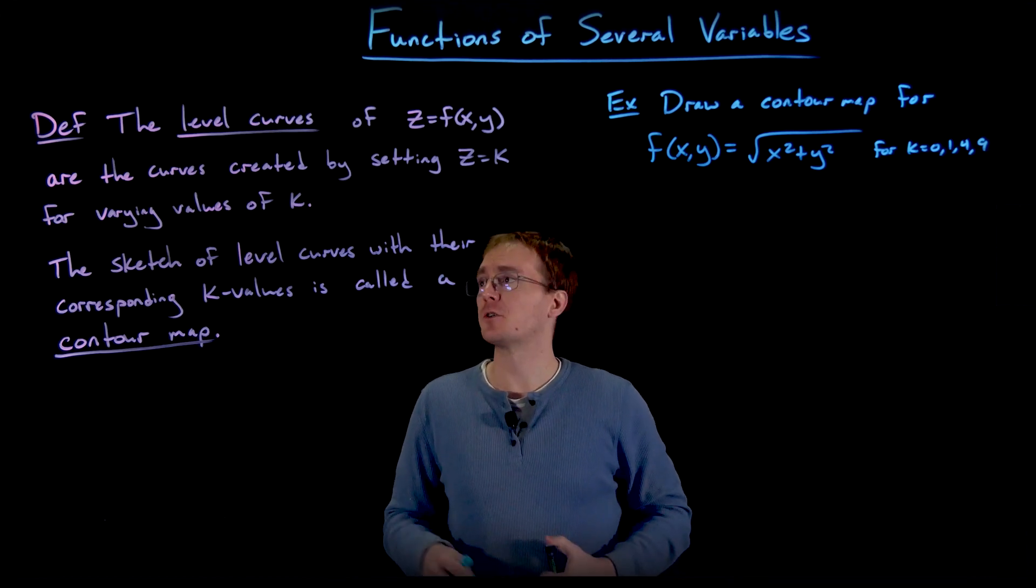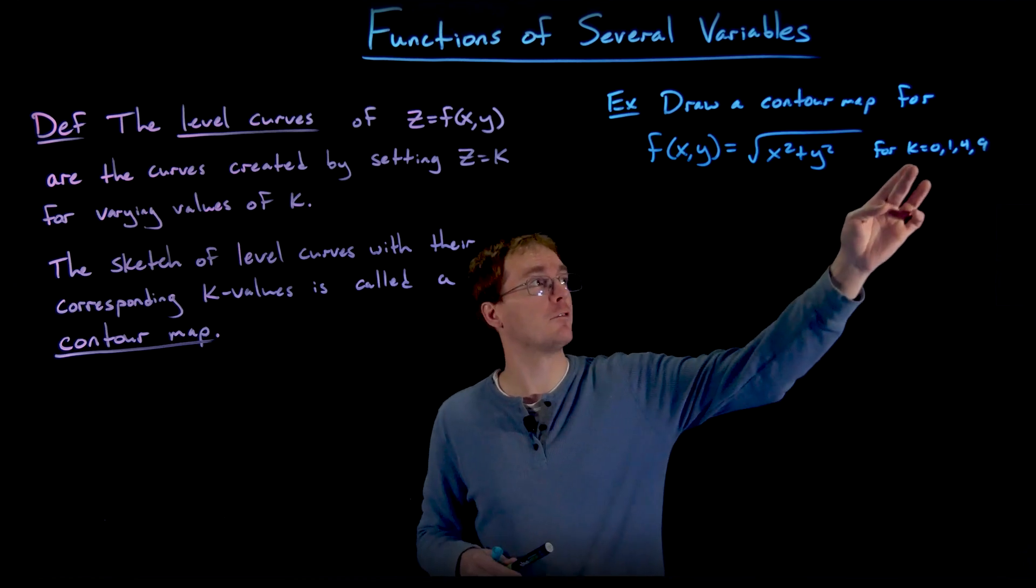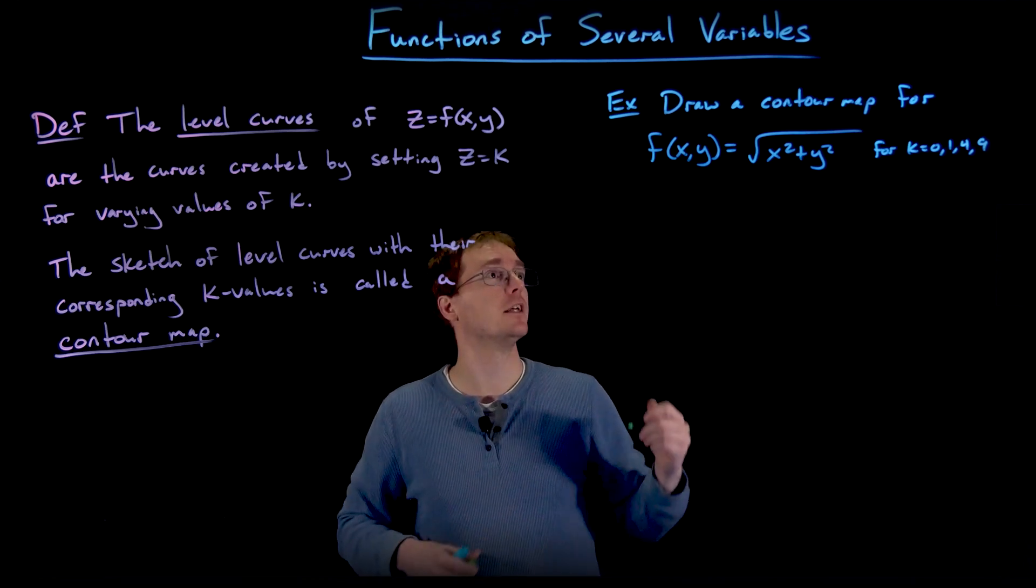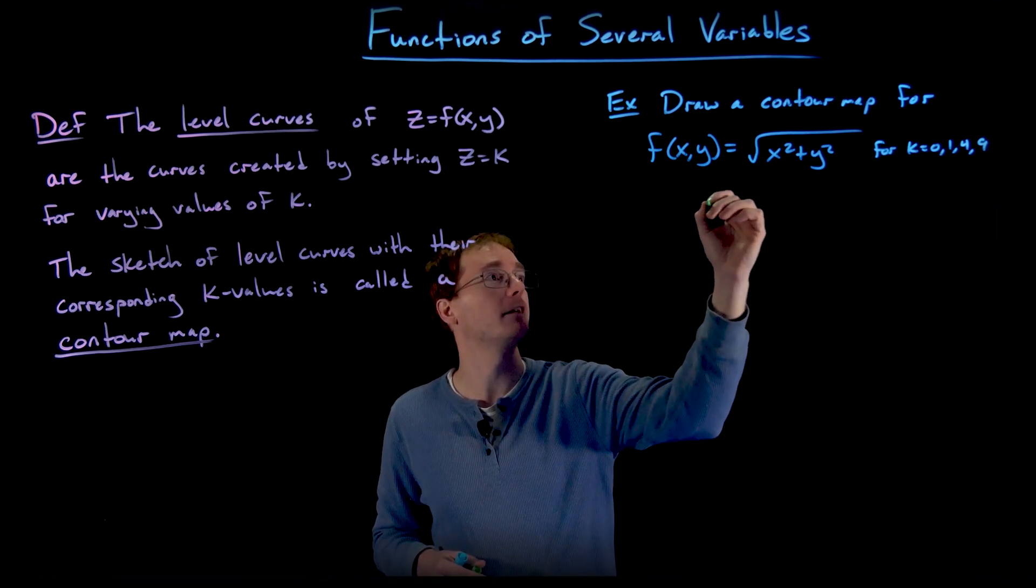All right, so to generate our contour map, first we have to create these four level curves for our different k values. And so let's go ahead and start with k = 0.